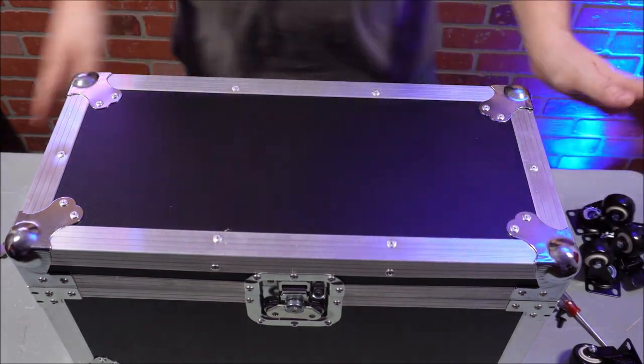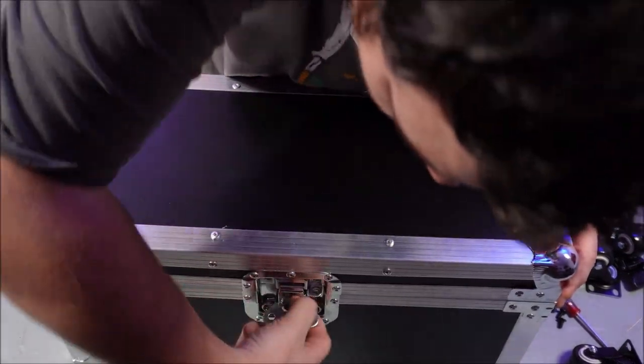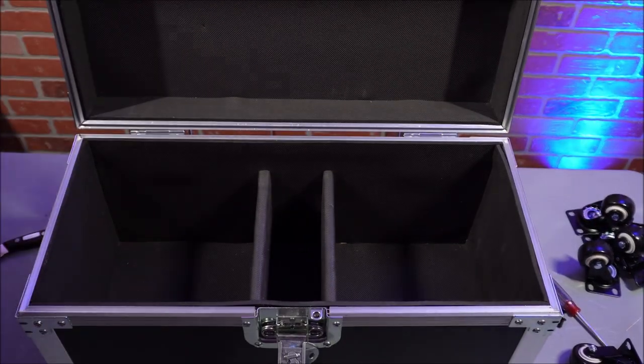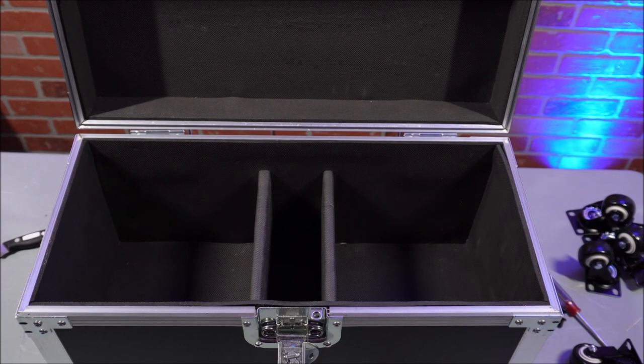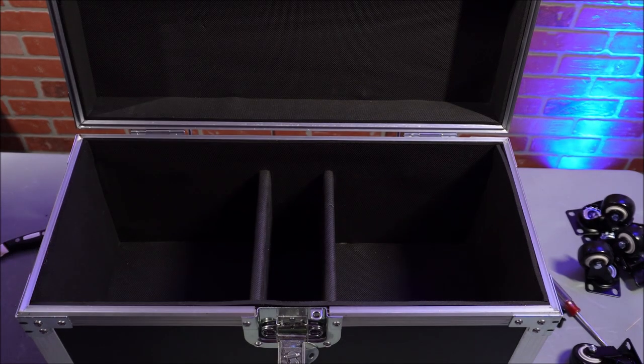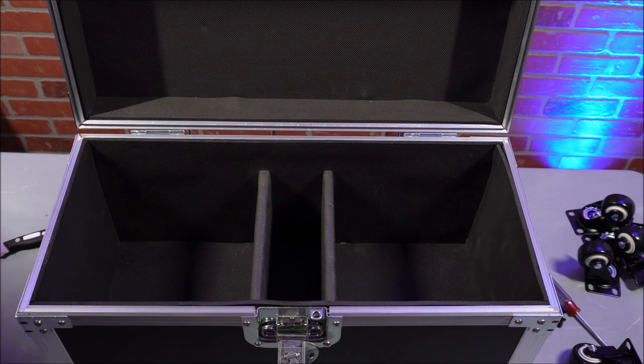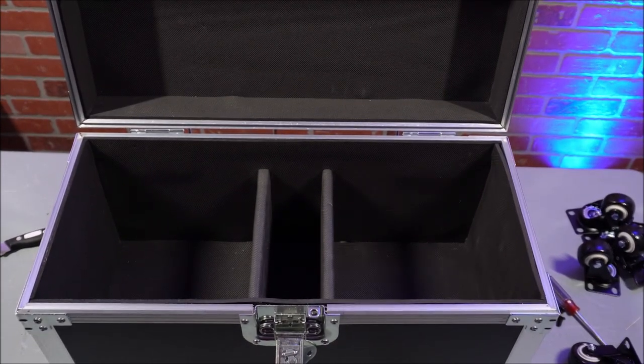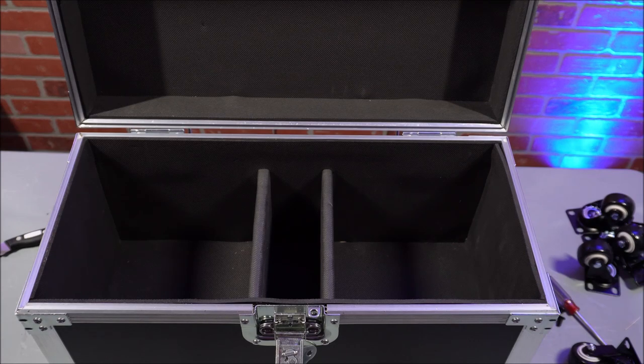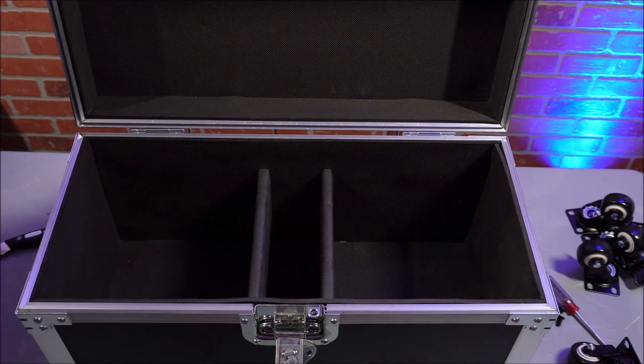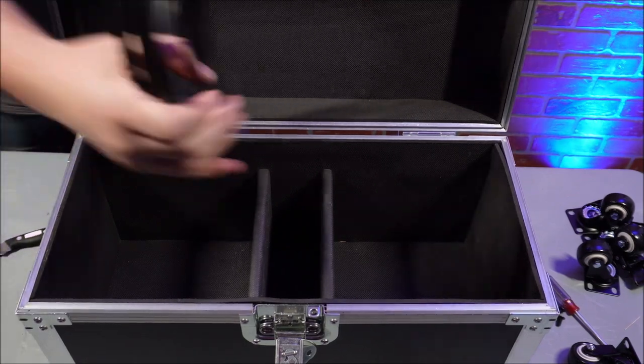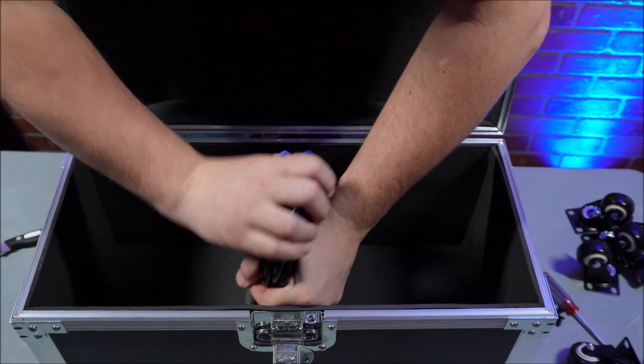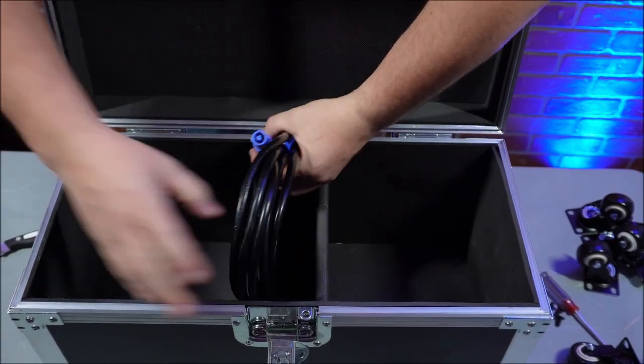So you get two locking and two regular wheels. Now to have a way to link my cold spark units together, I have a 15 foot power cable. Let me see if I can get that to fit in the centerpiece. I don't know if it will because it's smaller than I thought.